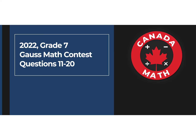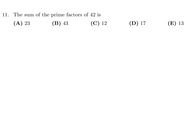2022 Grade 7 Gauss Math Contest, questions 11 through 20. The sum of the prime factors of 42 is... 42, if you break it down into its prime factors, is 2 times 3 times 7. So they want the sum of those prime factors, which would be 2 plus 3 plus 7, which is 12. So the answer is C.